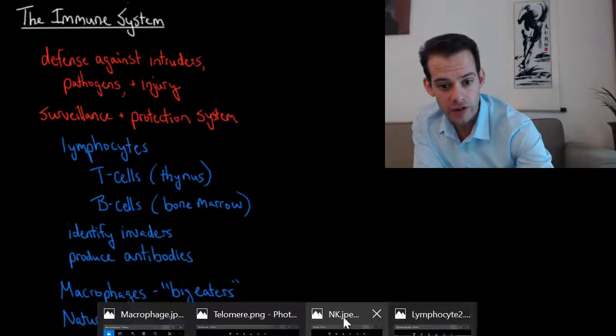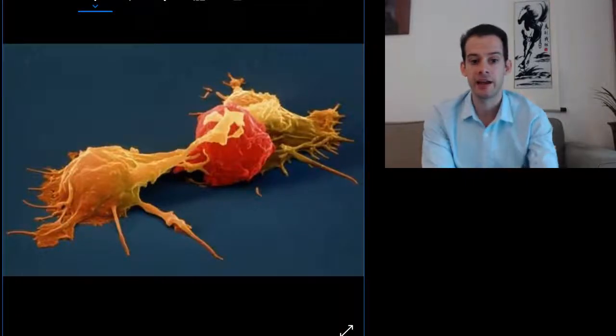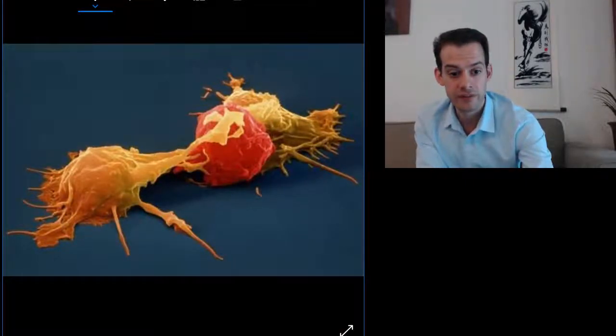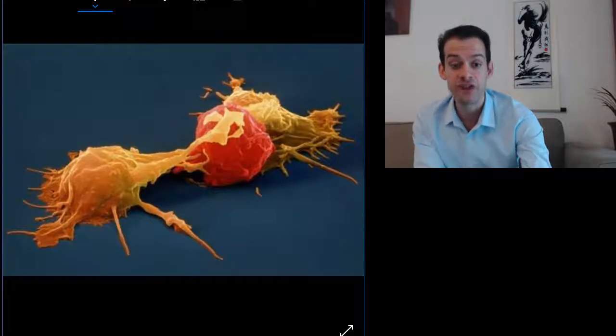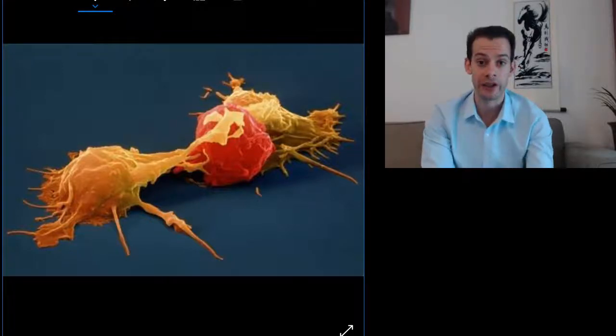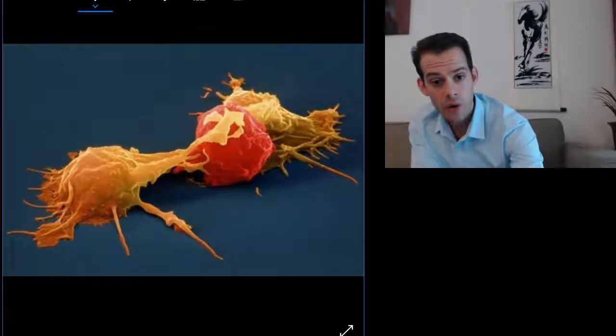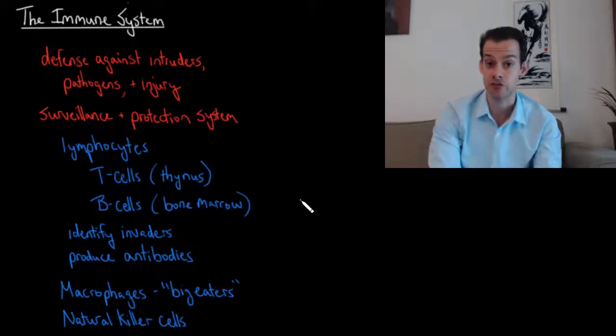And then we also have what are called natural killer cells. And here this orange-yellow cell here is the natural killer cell. And these are cells that can directly attack and destroy invaders. So what does all this have to do with the stress response?